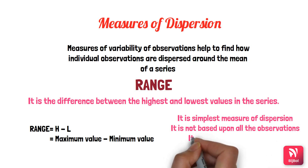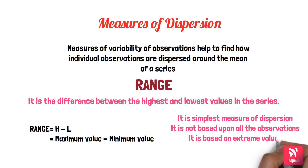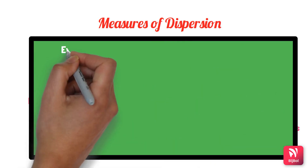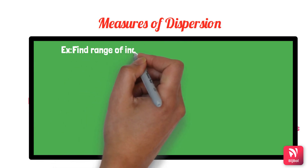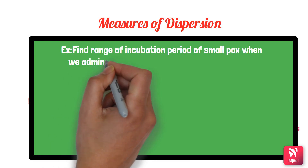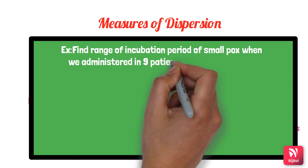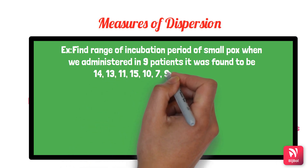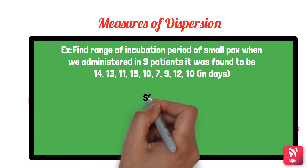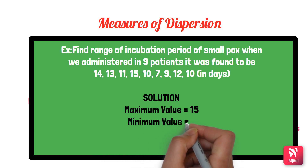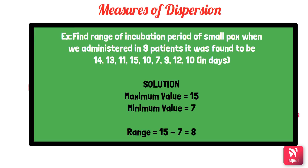For example, to find the range of the incubation period of smallpox in nine patients, the data given is: 14, 13, 11, 15, 10, 7, 9, 12, 10 days. The maximum value is 15 and the minimum value is 7. Therefore, the range is 15 − 7 = 8.